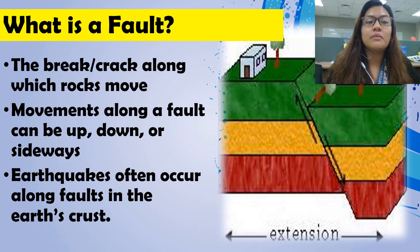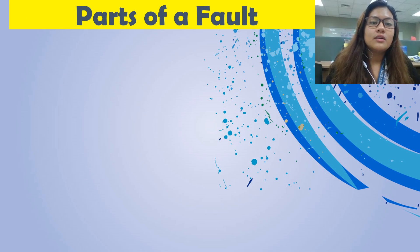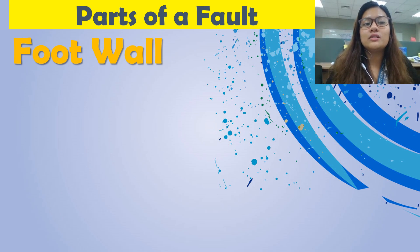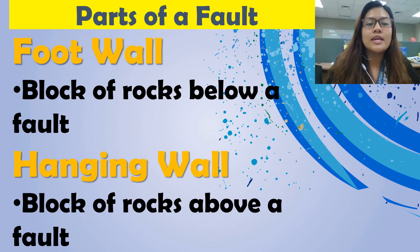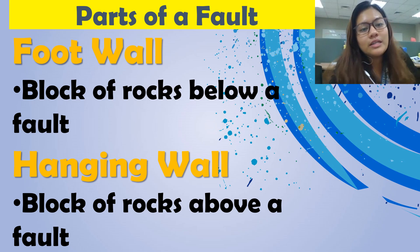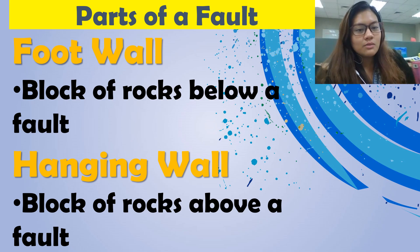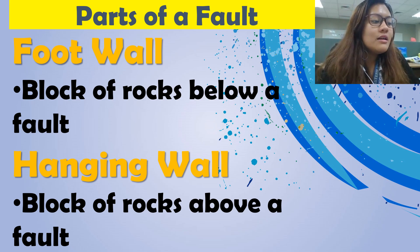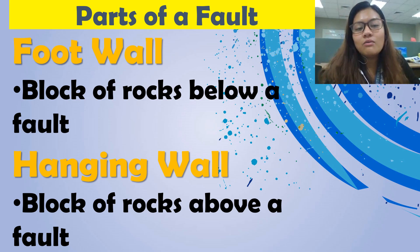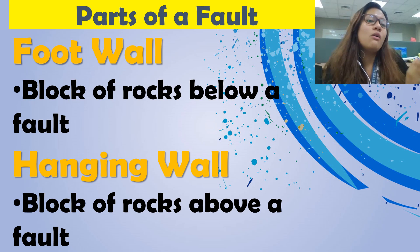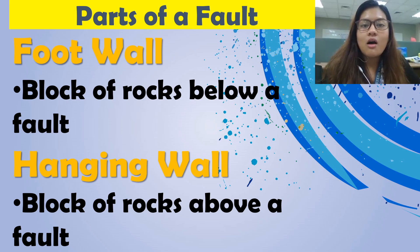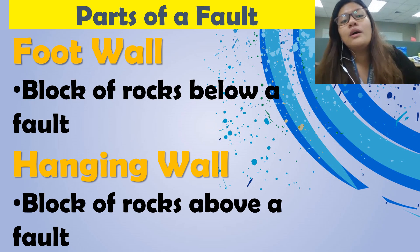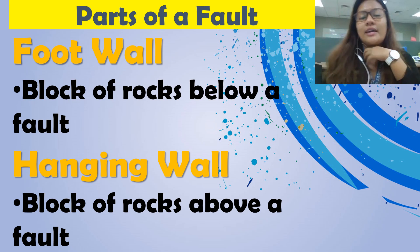Fault movements along a fault can be up, down, or sideways. We have two parts of a fault: the foot wall and the hanging wall. Foot wall is a block of rocks below a fault and hanging wall is a block of rocks above a fault. Do not be mistaken — foot wall and hanging wall are not whole; they are actually blocks of rocks below and above the fault line.